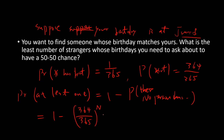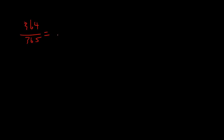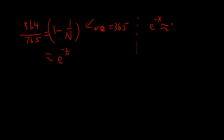Suppose you ask n people. The probability of at least one match equals 1 minus (1 − 1/365)^n. You want this to be larger than 0.5. One easy approach: approximate (1 − 1/365)^n as e^(−n/365), because e^(−x) ≈ 1 − x when x is very small, and 1/365 is small enough.